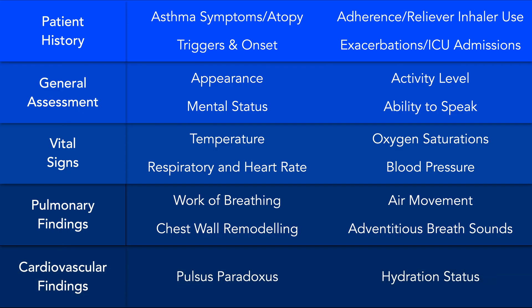In regard to the cardiovascular exam, it is important to assess the pulses. In severe status asthmaticus, you may notice pulsus paradoxus — that is, when the patient inspires, there is a decrease in pulse amplitude, which leads to the peripheral pulse not being palpable. Also, because patients with severe asthma are often clinically dehydrated, it is important to assess hydration status as well.